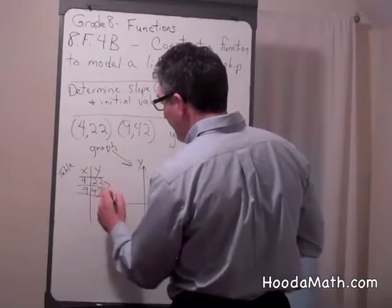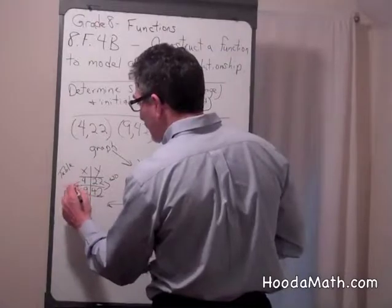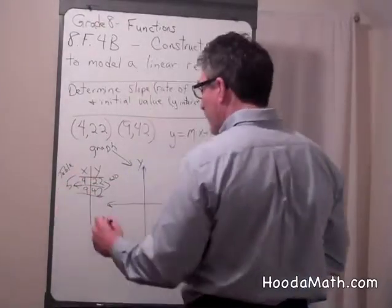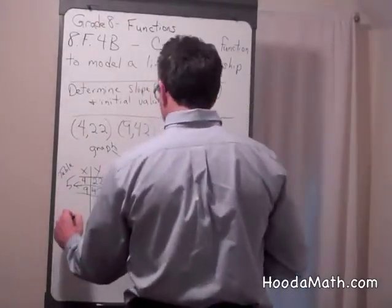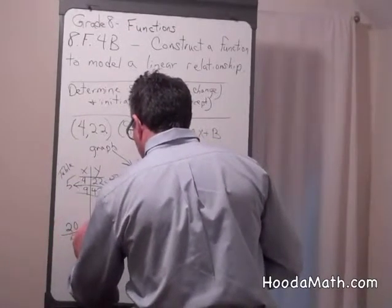It's the change of y, which would be positive 20, over the change of x, which is 5. So our slope is 20 over 5 or 4 over 1.